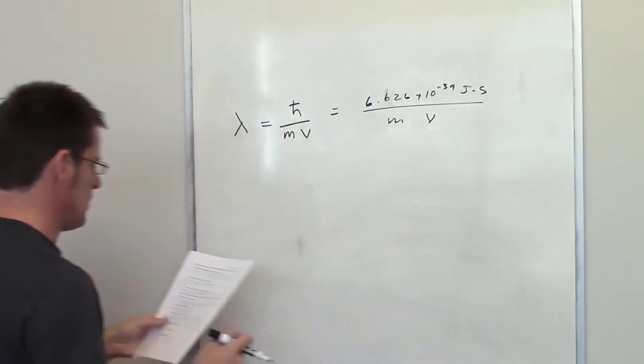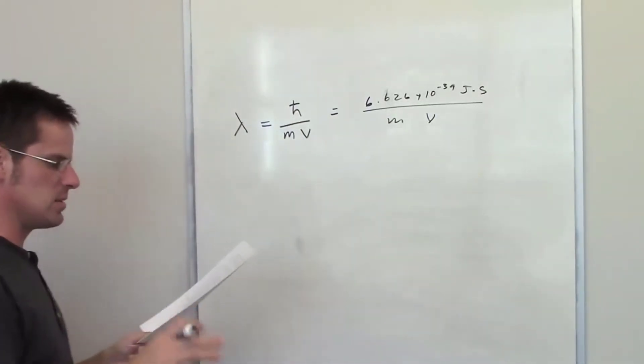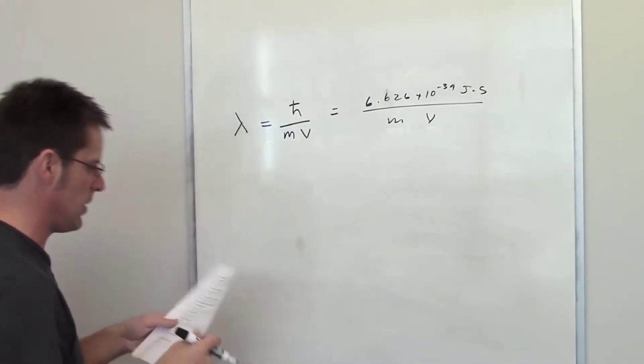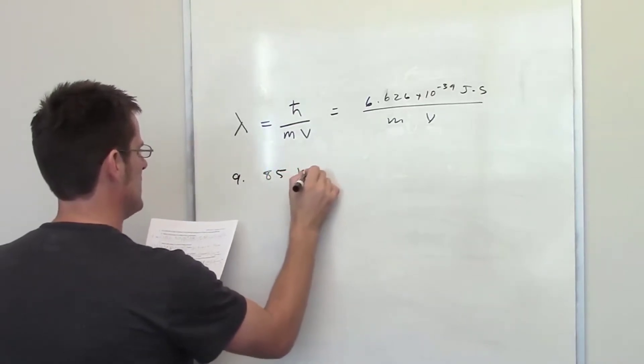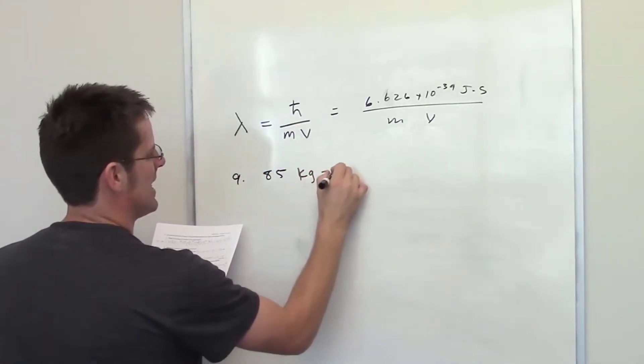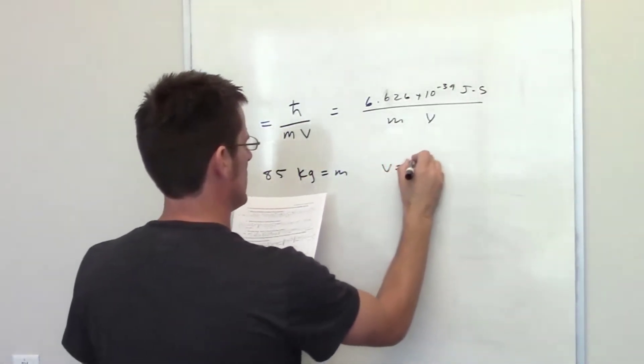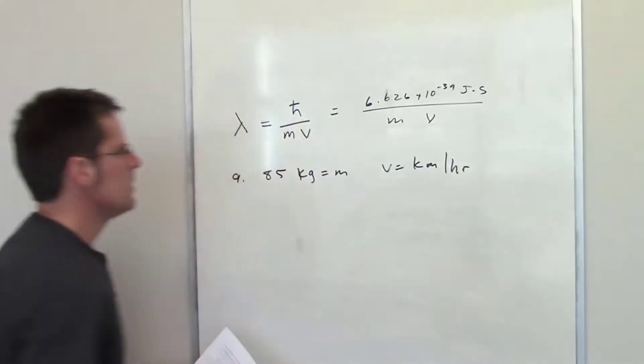In this problem, we're asked to use the de Broglie relationship to determine the wavelengths of the falling objects. In Part A, it says an 85-kilogram person traveling at a velocity of 50 kilometers per hour.